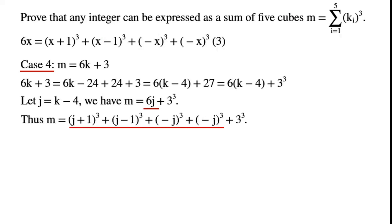Thus, m equals (j+1) cubed plus (j-1) cubed plus (-j) cubed plus (-j) cubed plus 3 cubed, expressing m as a sum of 5 cubes.